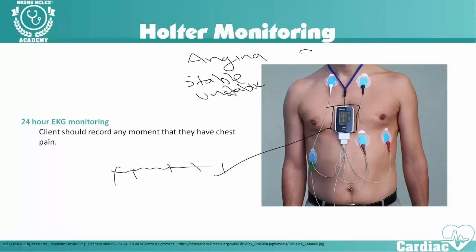Let's also talk about EKG placement. For our five-lead EKG, I don't like mnemonics normally because I believe that if you understand the process, you'll better understand and remember it forever. However, for EKG placement I think there's a very easy color-based mnemonic. We have our white, green, black, red, and brown leads.